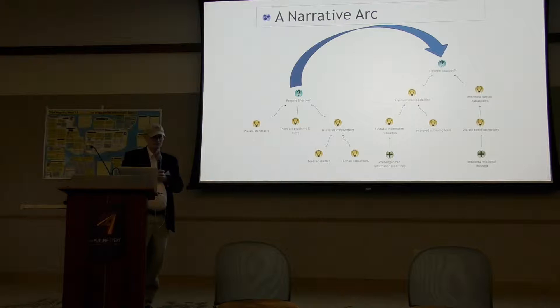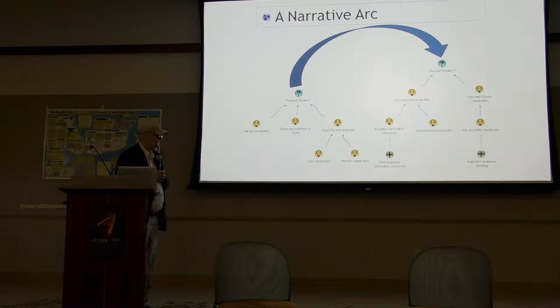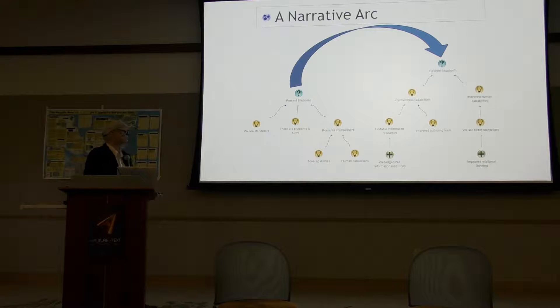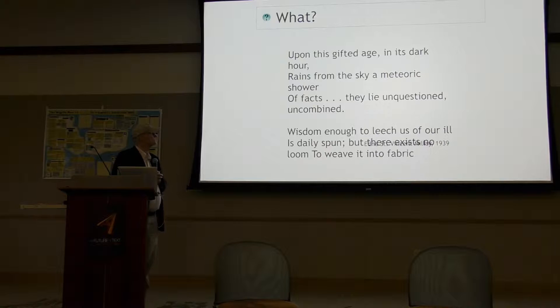I offer a couple of suggestions of what that may entail — for example, findable information resources, which implies well-organized information resources, and improved authoring tools, which you've heard about today. Improved human capabilities means we are better storytellers, and we get there by being better relational thinkers. If I use the symbol in the upper left-hand corner — the Compendium symbol for a map — I will now go inside that map with a couple of questions. The first one is: what?